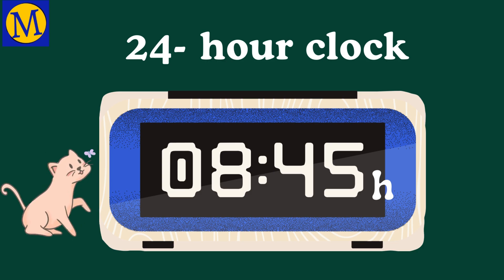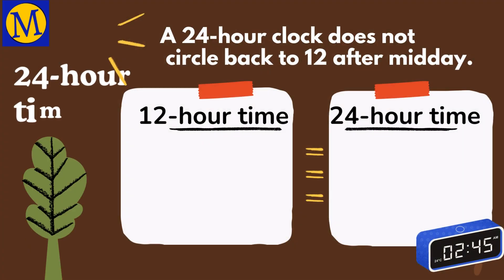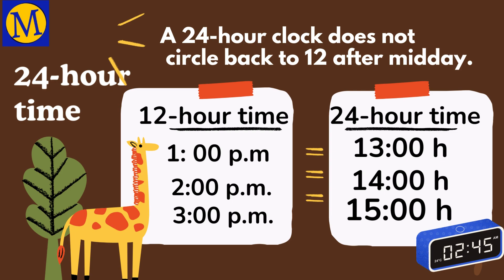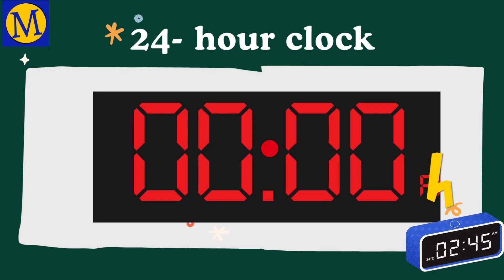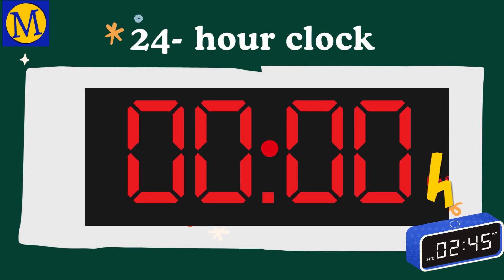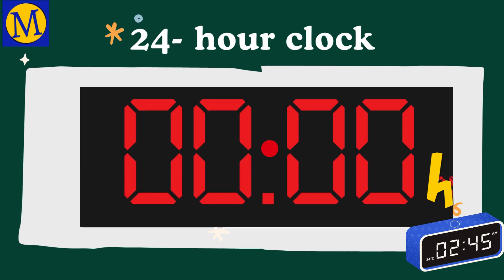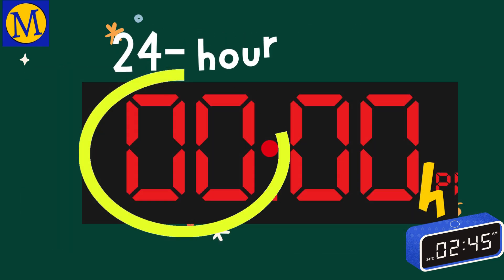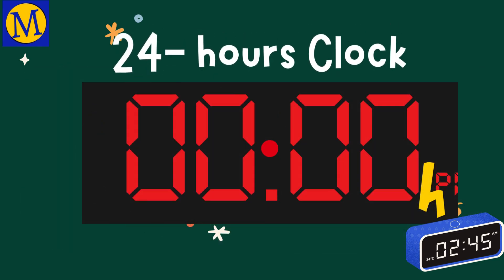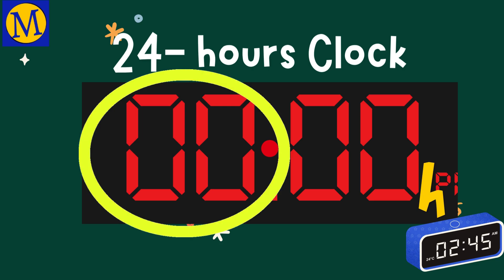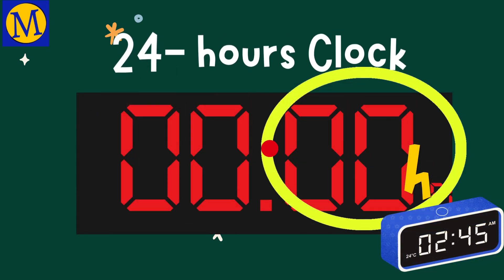The 24-hour clock does not circle back to 12 after midday, but continues to show time as 13, 14, 15 hours and so on to display all 24 hours of the day. On a 24-hour clock, the time is displayed using four digits. The first two digits show the hours and the last two digits show the minutes, with a colon in between. An H is written at the end, meaning hours.